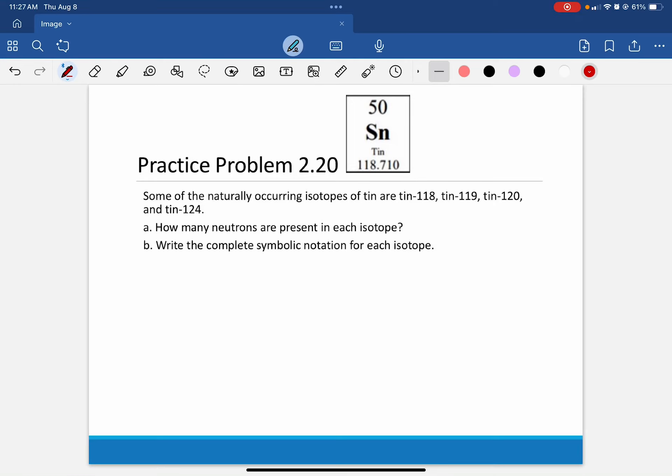Practice Problem 2.20 reads, some of the naturally occurring isotopes of tin are tin-118, tin-119, tin-120, and tin-124.